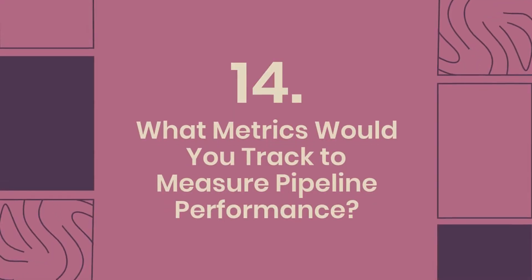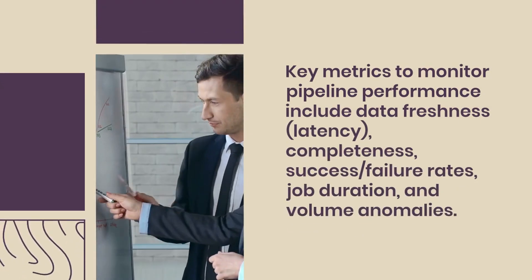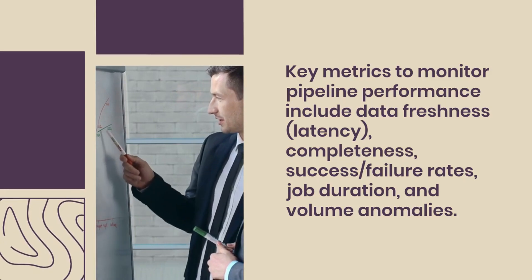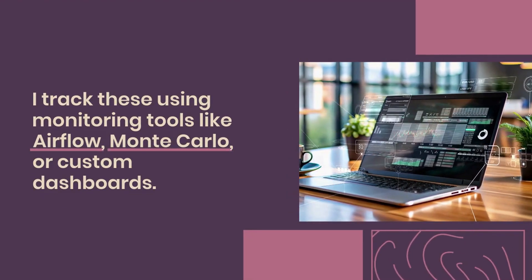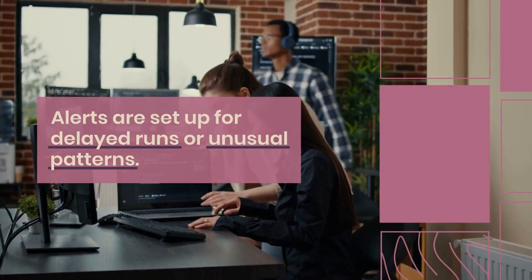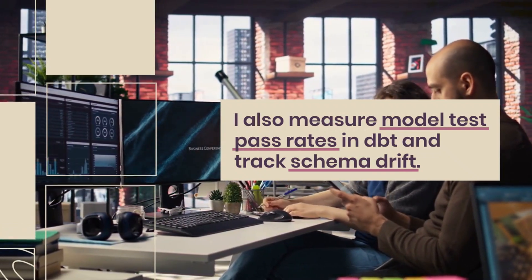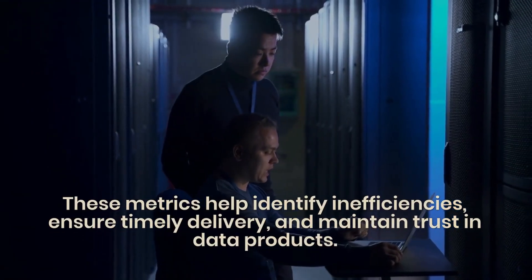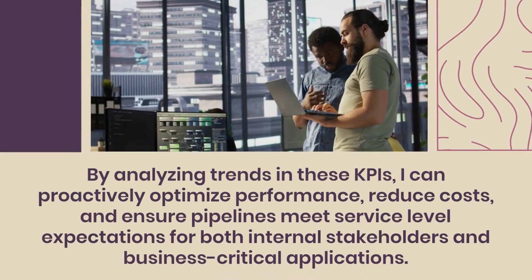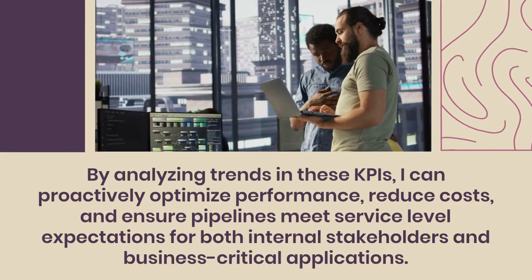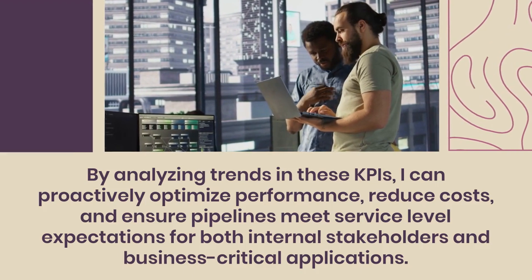Question 14: What metrics would you track to measure pipeline performance? Key metrics to monitor pipeline performance include data freshness, latency, completeness, success and failure rates, job duration, and volume anomalies. I track these using monitoring tools like Airflow, Monte Carlo, or custom dashboards. Alerts are set up for delayed runs or unusual patterns. I also measure model test pass rates in DBT and track schema drift. These metrics help identify inefficiencies, ensure timely delivery, and maintain trust in data products. By analyzing trends in these KPIs, I can proactively optimize performance, reduce costs, and ensure pipelines meet service-level expectations for both internal stakeholders and business-critical applications.